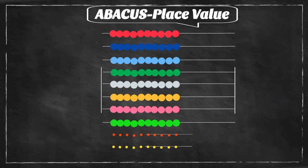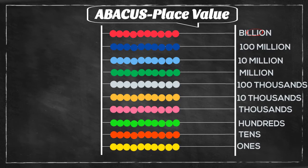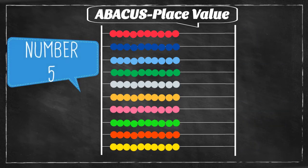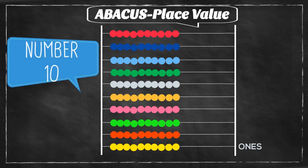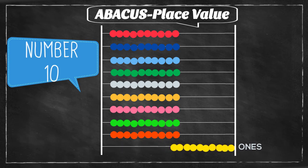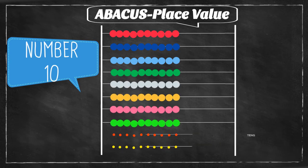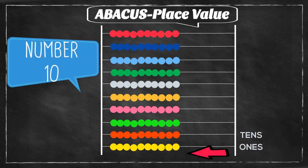If we show the number 5, the child will move five beads on the ones place. But if we ask for number 10, the child should move ten beads on the ones place, then move those ten beads back, and in that place move one bead on the tens place. This process is what we need to remember, as it's crucial for all abacus-related mathematical operations.